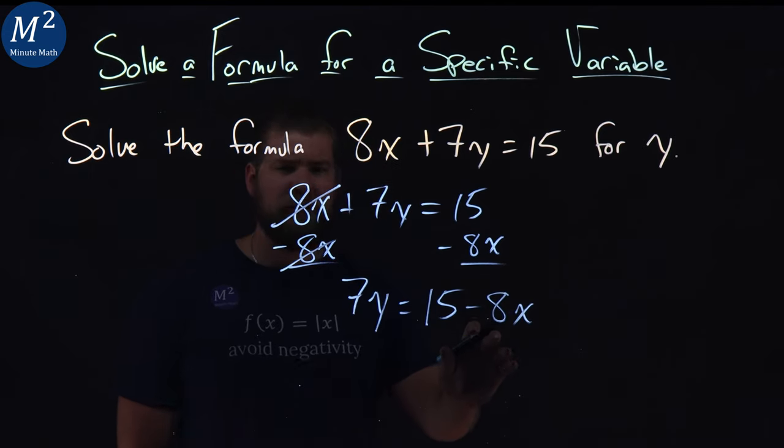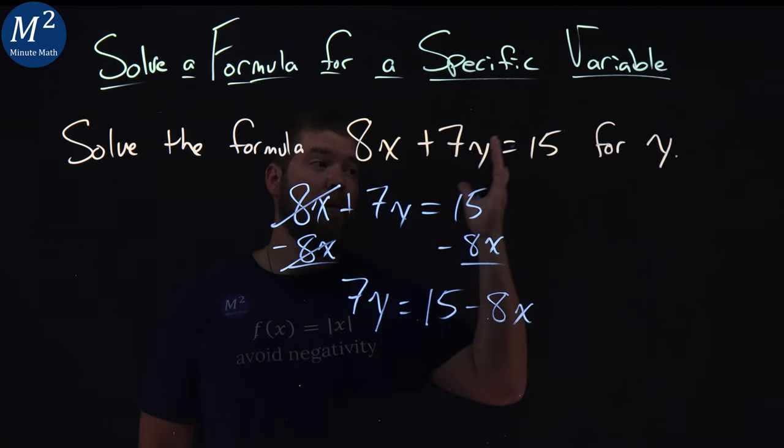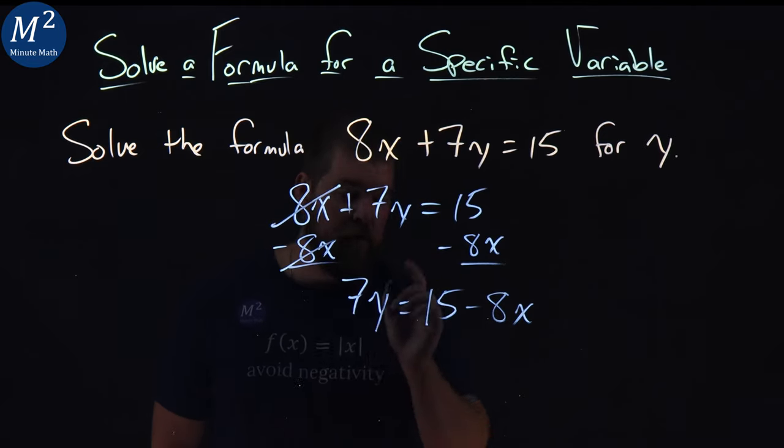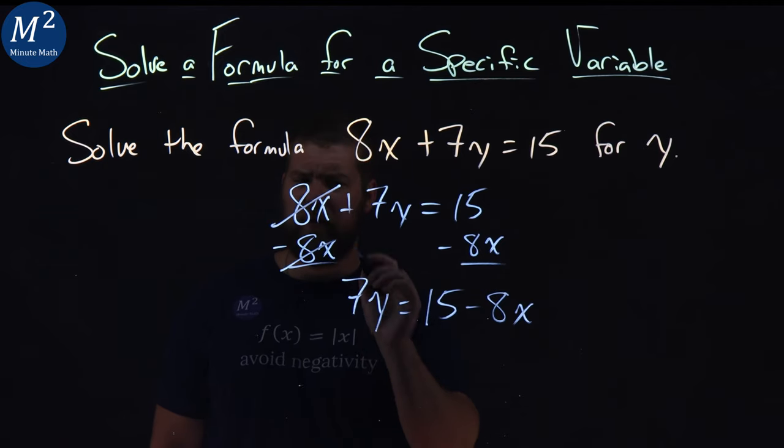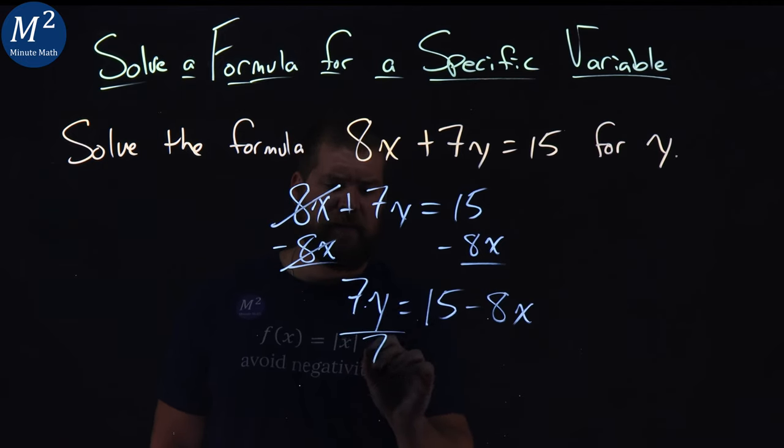Now again, they're not like terms, we can't combine them. Well, lastly, I have 7 times y. I still want to get y by itself, so to do that, I'm going to, well, opposite of multiplication here is division, and divide both sides by 7.